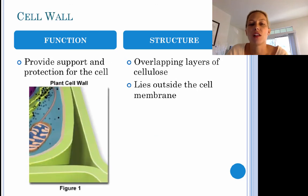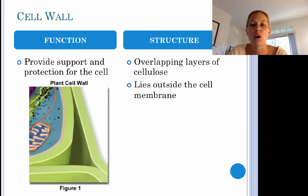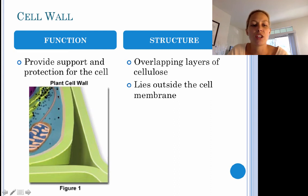Next, we have the cell wall, which lies outside the cell membrane. It's comprised of overlapping layers of cellulose, and its job is to provide support and protection for the cell. In the diagram, the green portion is the plant cell wall, and the brown portion lying inside the cell wall is the cell membrane.